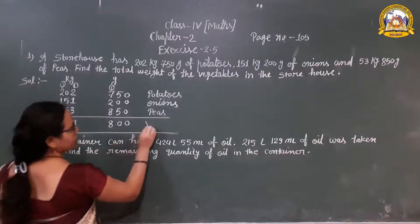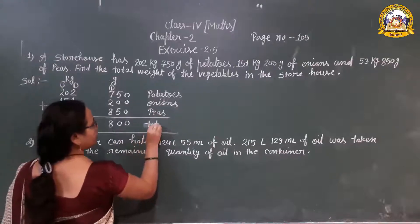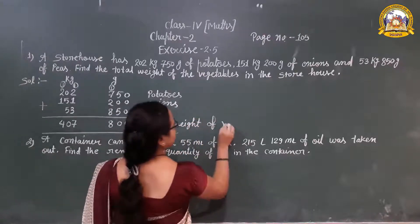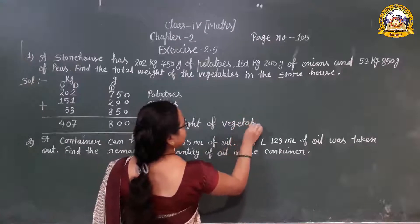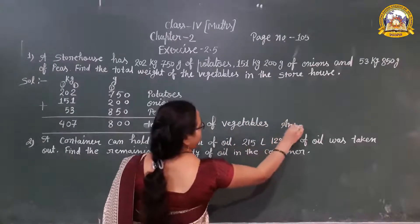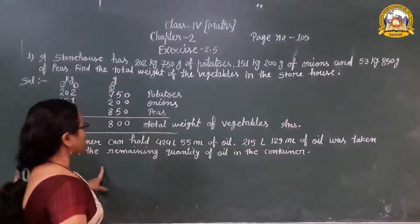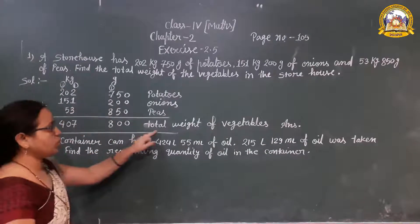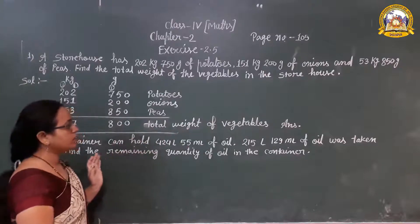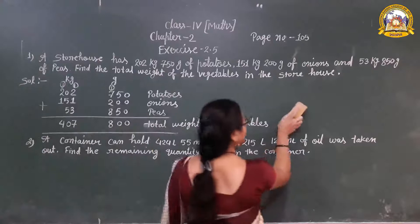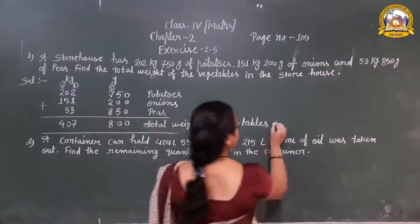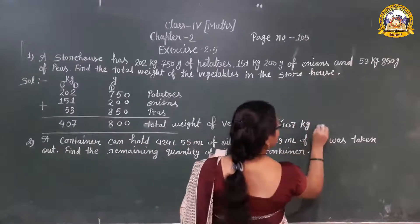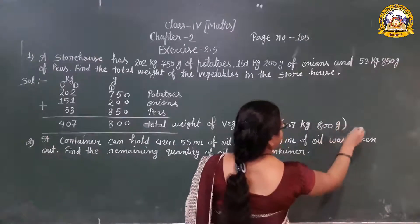Total weight of vegetables: In the bracket, 407 kilogram 800 g. Okay.